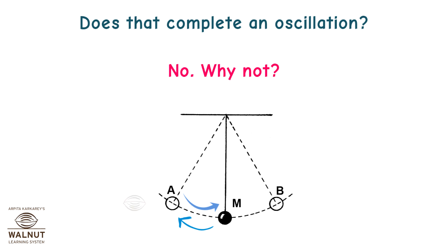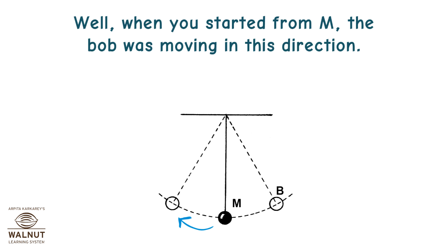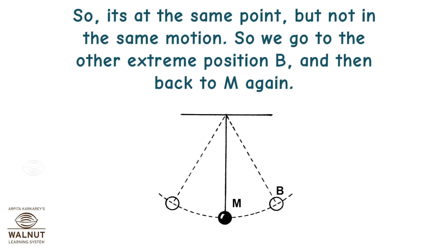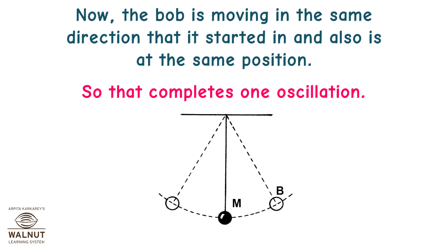No. Why not? Well, when you started from M, the bob was moving in this direction. Right now, at M, the bob is moving in this direction. So it's at the same point, but not in the same motion. So we go to the other extreme position B, and then back to M again. Now, the bob is moving in the same direction that it started in and also at the same position. So that completes one oscillation.